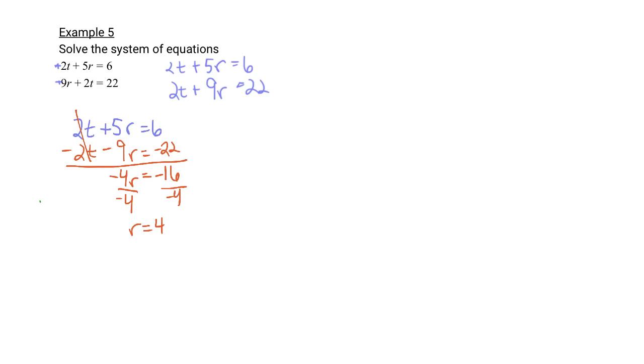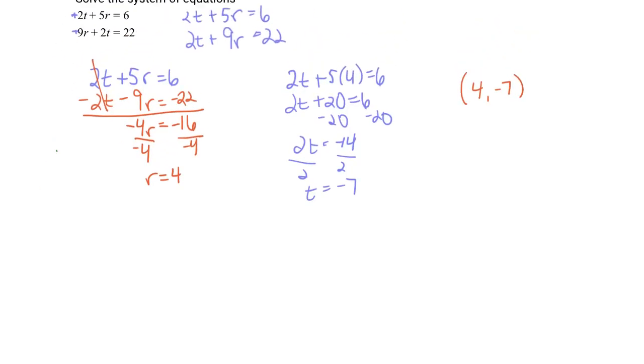That's half the answer. We need to go back and plug this in and find what T equals. 2T plus 5 times 4 is 6. That's 2T plus 20 is 6. Subtract 20 from each side. 2T is negative 14. Divide both sides by 2, T is negative 7. Whenever your variables are not X and Y, they go in parentheses in alphabetical order. So R comes before T. 4, negative 7 is our coordinate point. If you were to plug these into Desmos to check your work, make sure you change R into X and T into Y.